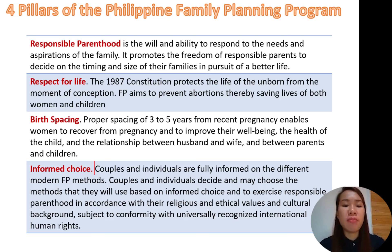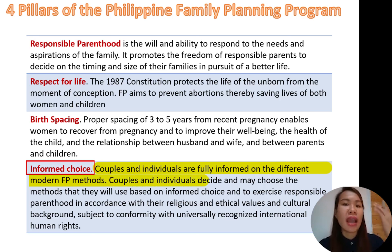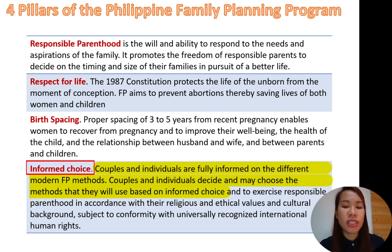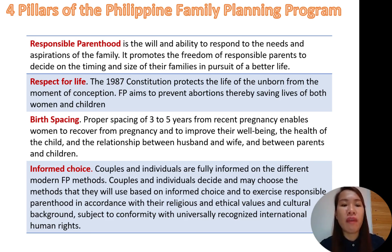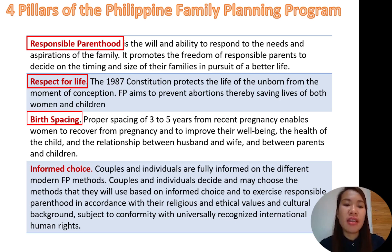So birth spacing really is not just for the children, but also for the mother. Another pillar which is very important is informed choice. Couples and individuals must be fully informed on the different family planning methods — they should know all their options and they will choose. They will choose the methods they use based on informed choice and will exercise responsible parenthood in accordance with their religion, their ethical values, and their culture, subject to conformity with universally recognized international human rights. These are the four pillars: responsible parenthood, respect for life, birth spacing, and informed choice.